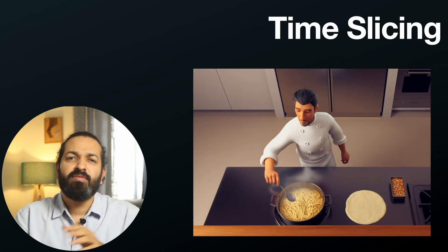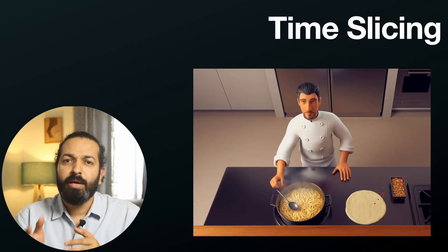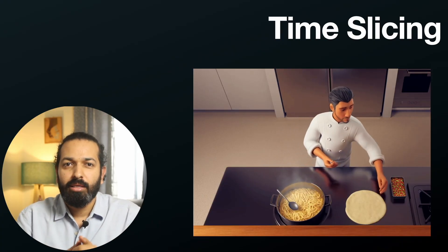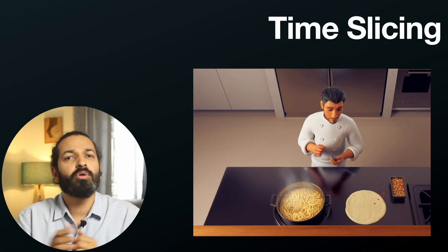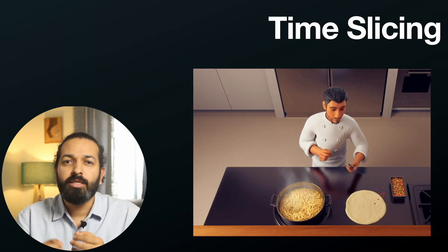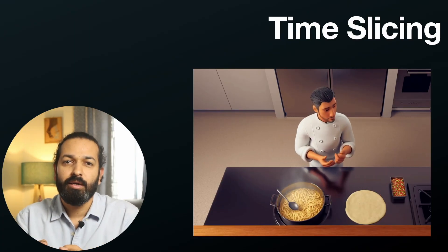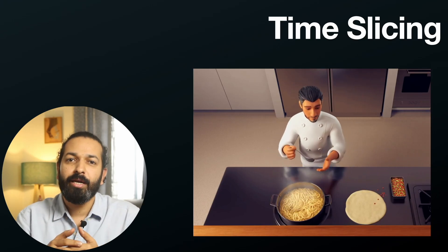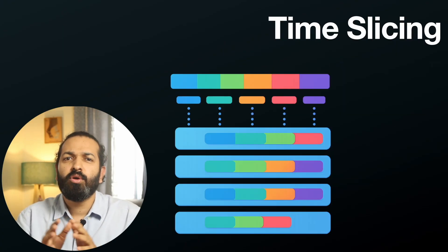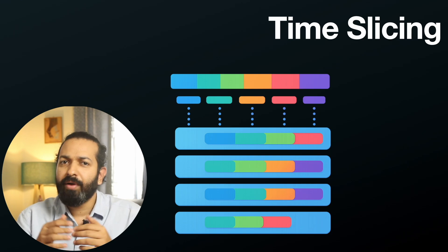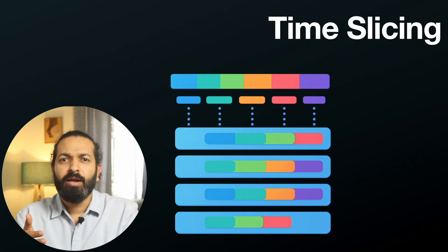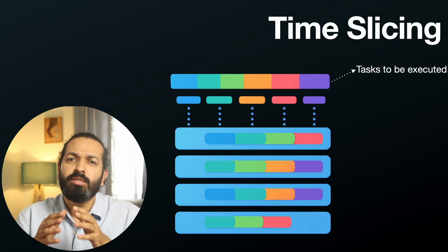Think of it like a chef juggling multiple dishes. He cooks pasta for 2 seconds, switches to pizza for 2 seconds, then back to pasta. The switching is so fast that both dishes seem to cook together. But each switch has an overhead. More software threads doesn't always mean better performance. If you have 100 threads on a 4-core machine, they all go through time slicing. In fact, context switching overhead can actually make things slower.